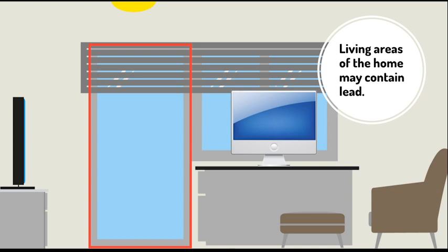Living areas of the home may contain lead. There is an image of a living room with a couch, ottoman, desk with a computer, a table with a television, a window, and a door — the door is highlighted as a potential lead exposure hazard. Living areas may have doors coated with lead paint that can chip, flake, or turn into lead dust when a door is opened and shut.